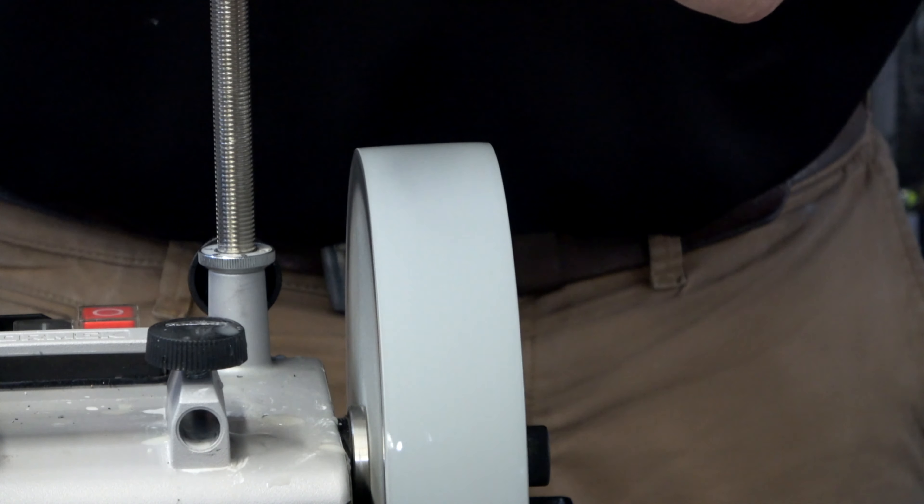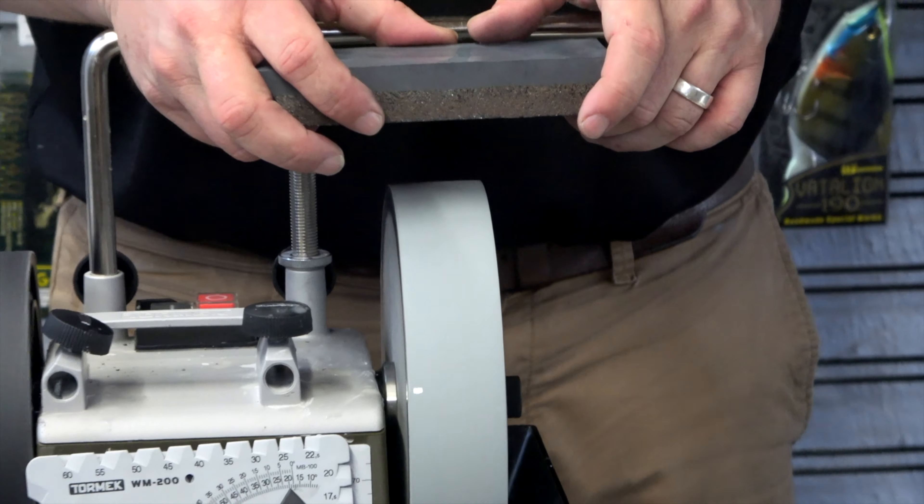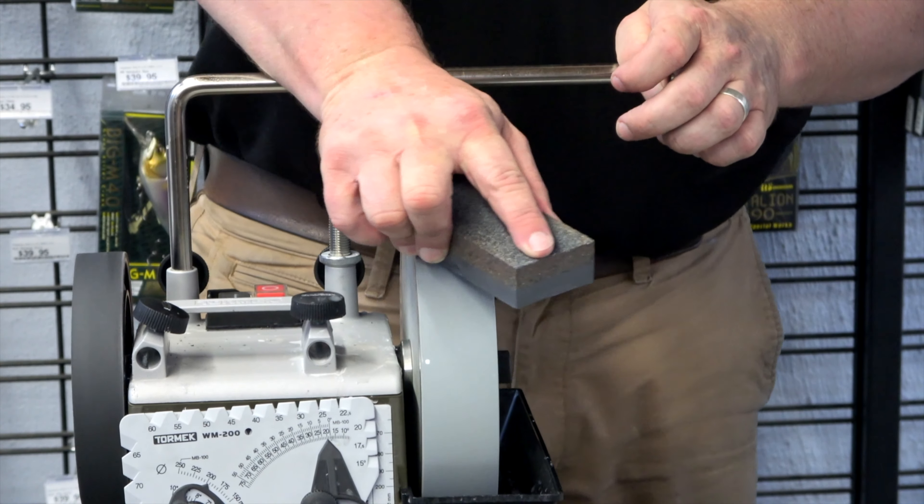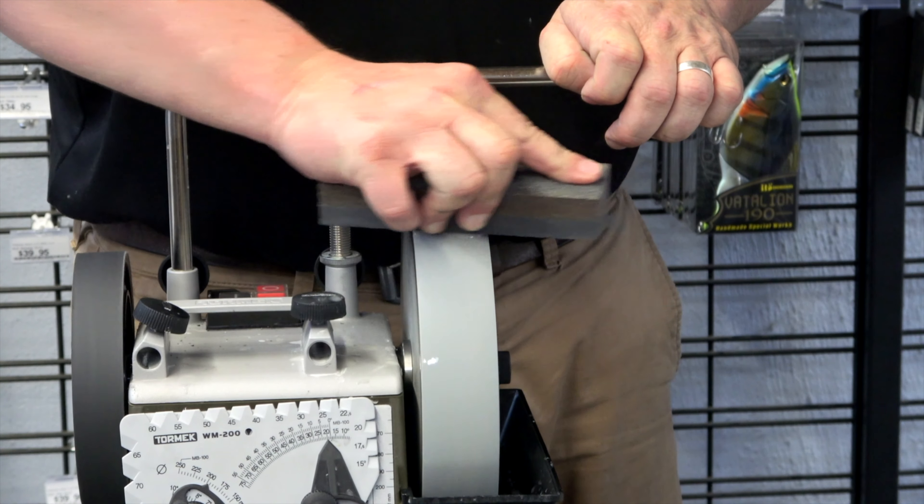When we started, we used the rough side of the stone to rough up the ceramic particles to make it a 220 grit. During the shaping process, the 220 grit is a faster process.